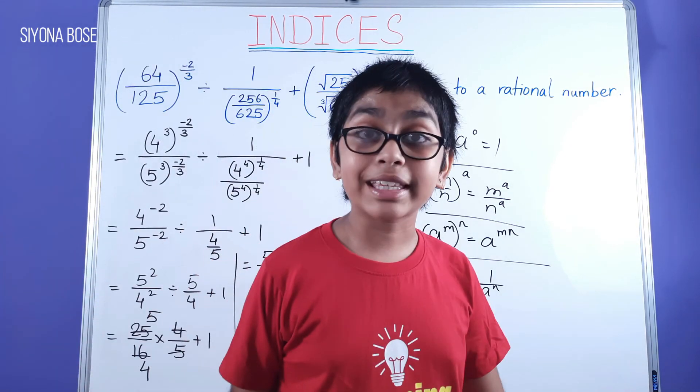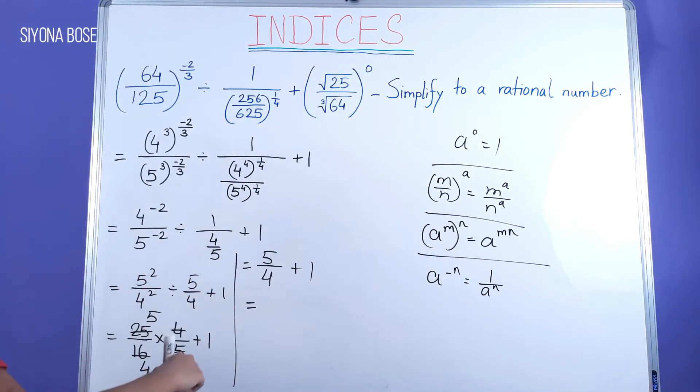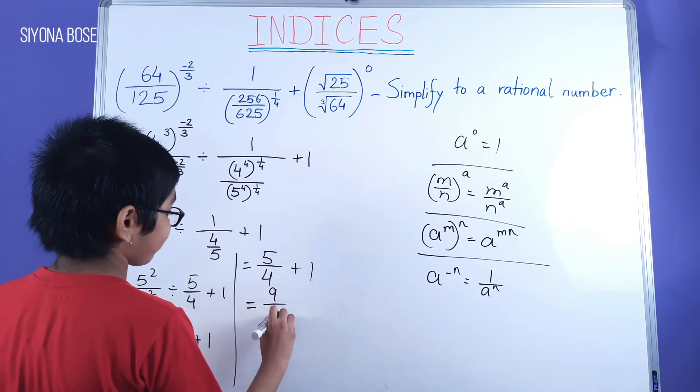So it's actually 5 by 4 plus 1. Calculating this mentally, we get 5 plus 4 plus 1, here 9 by 4.